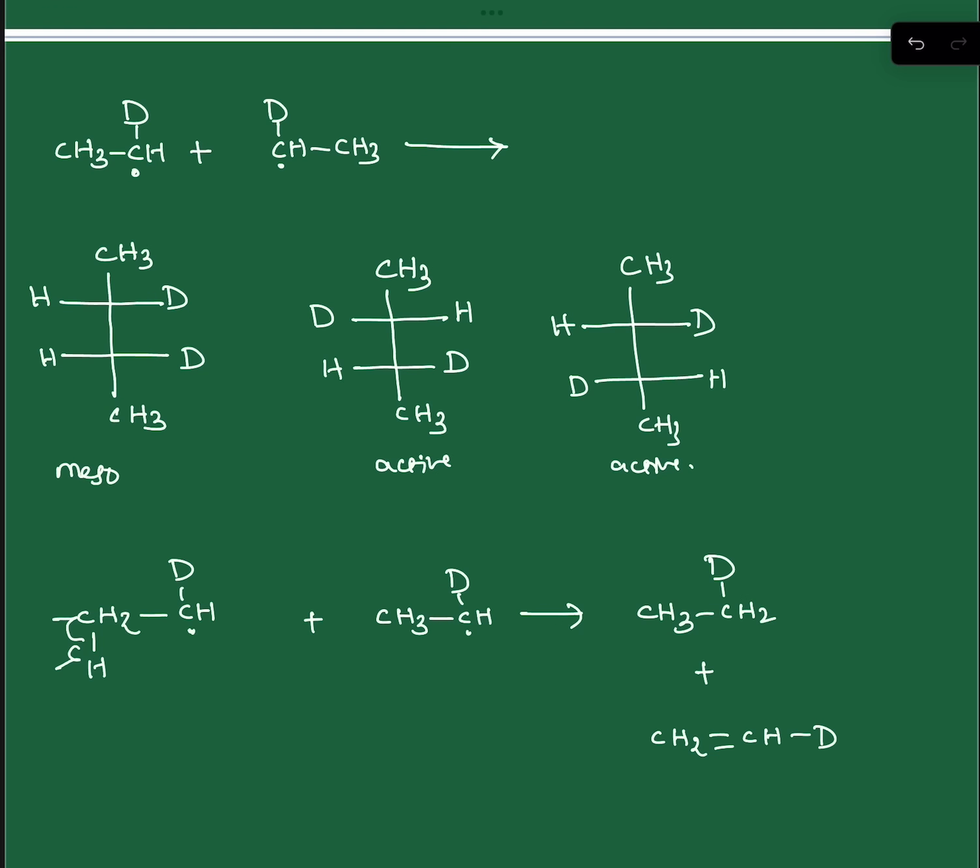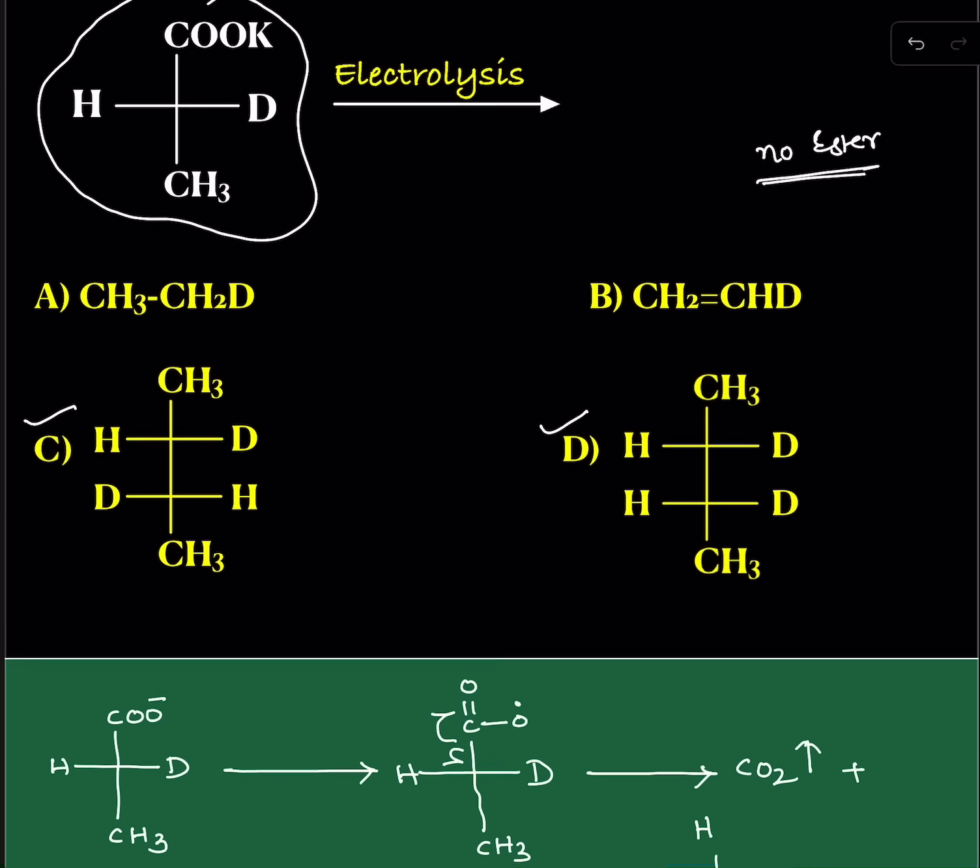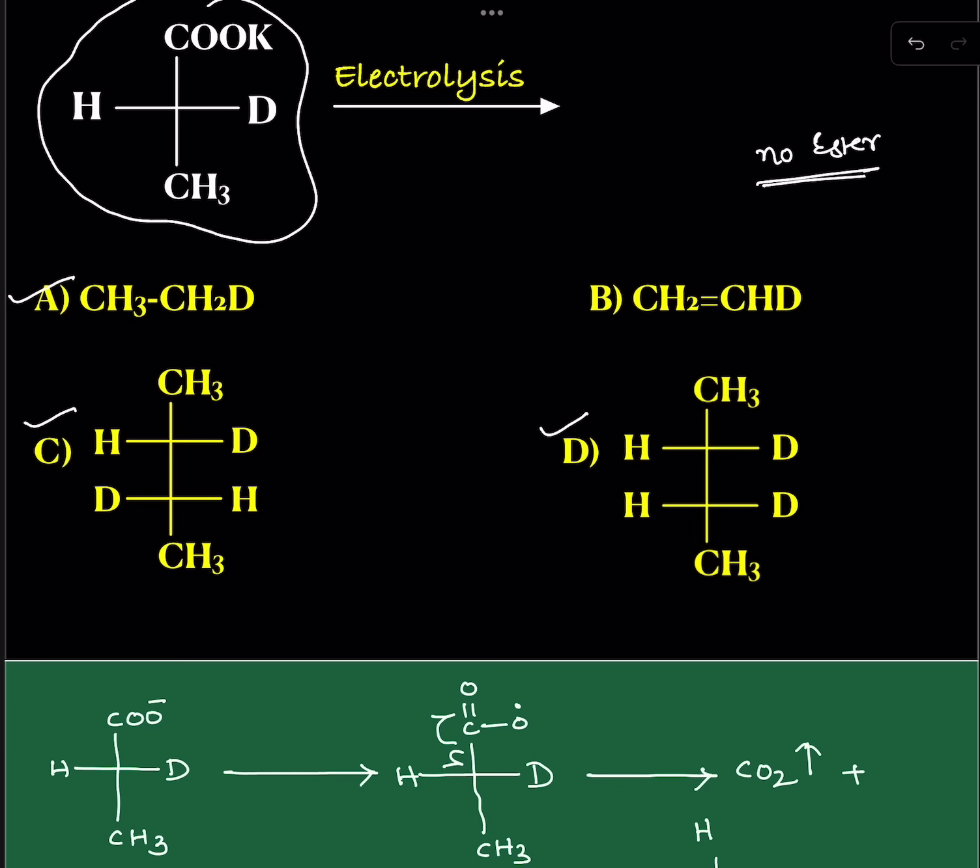Like this, alkane and alkene, deuterated alkane and deuterated alkene are also possible. So A and B are also possible. Finally, the answer is A, B, C, D. All these products are possible.